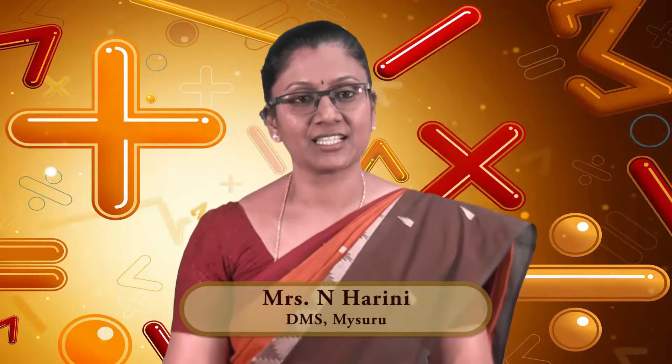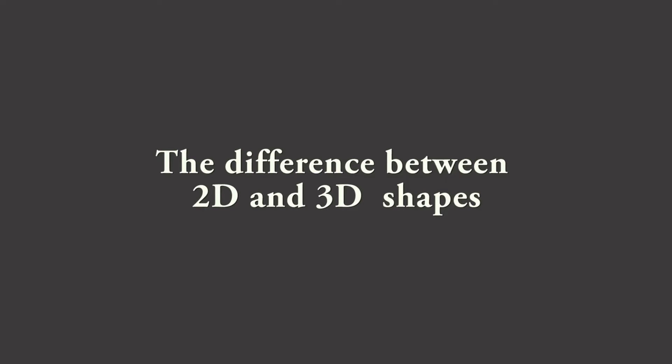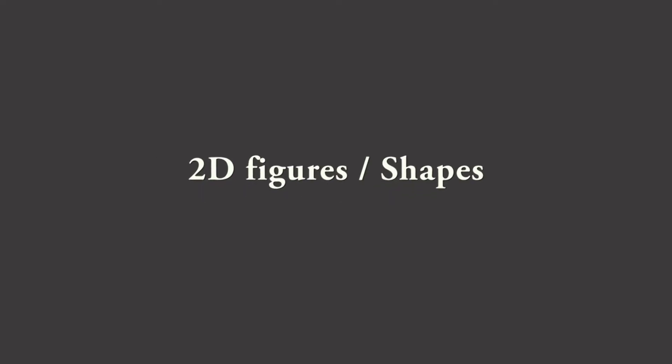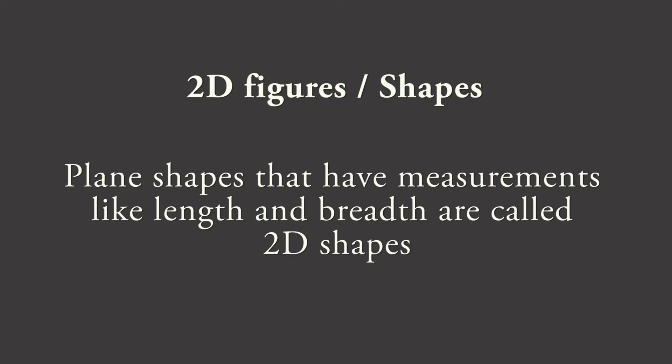Hello students, today we are about to discuss the views of 3D shapes. Let us first try to understand the difference between 2D and 3D shapes. Plane shapes that have measurements like length and breadth are called 2D shapes. For example, a rectangle, a square, a triangle or a circle.